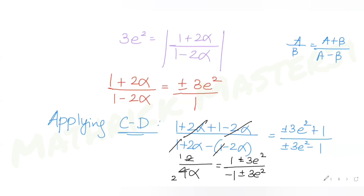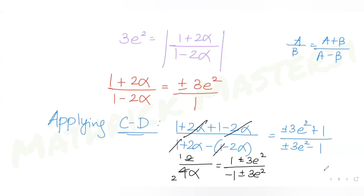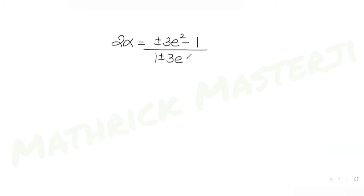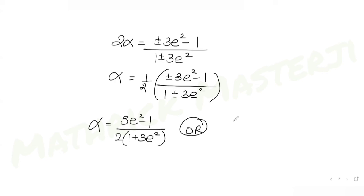Taking the reciprocal: 2α = (±3e² - 1)/(±3e² + 1). This gives two values of α: α = (3e² - 1) / [2(1 + 3e²)] or α = (-3e² - 1) / [2(1 + 3e²)].